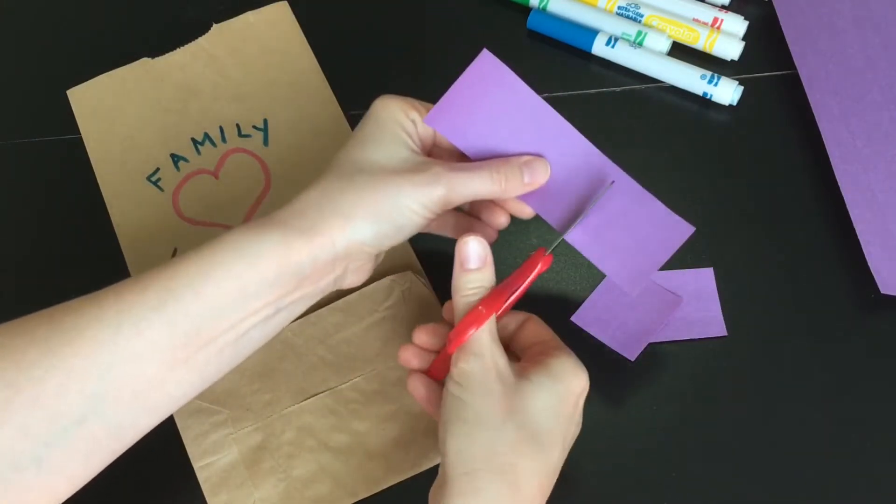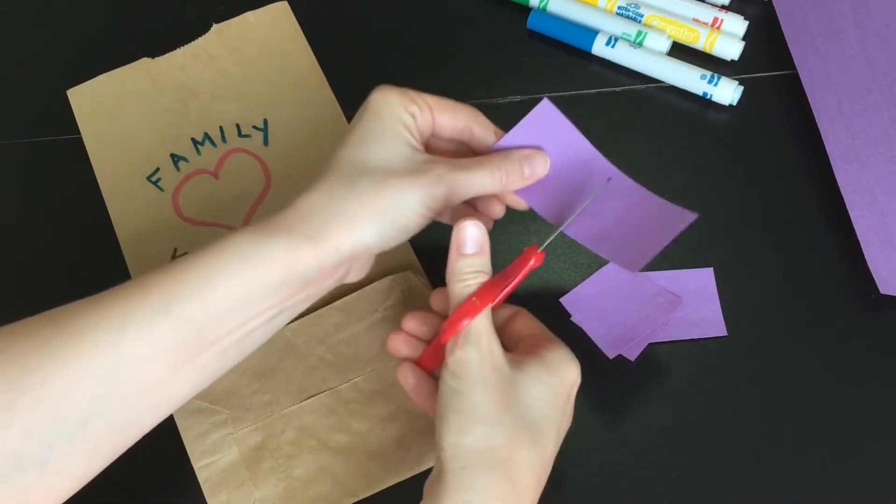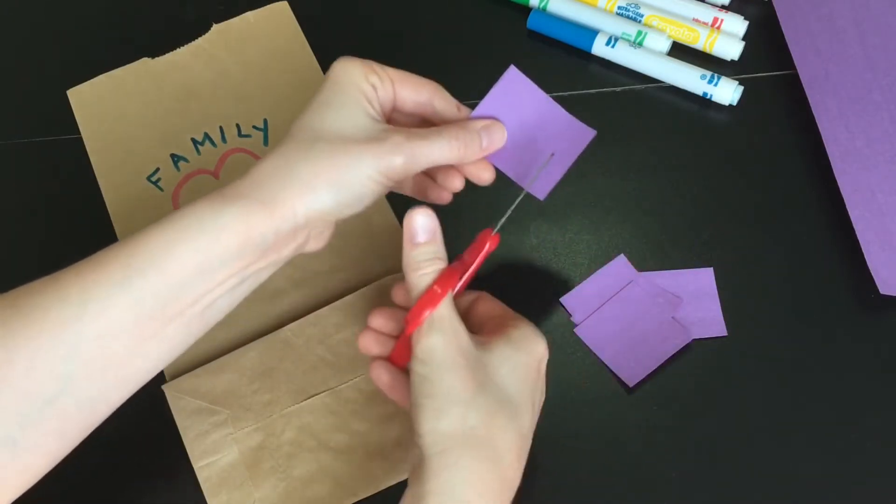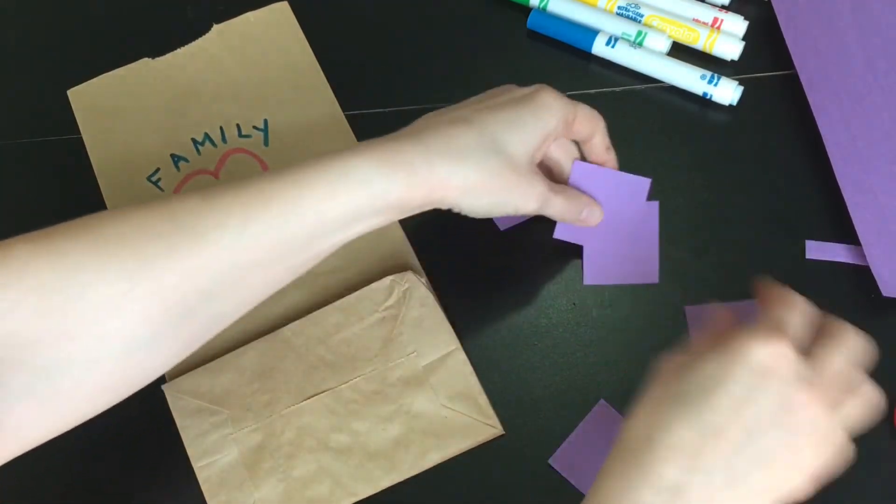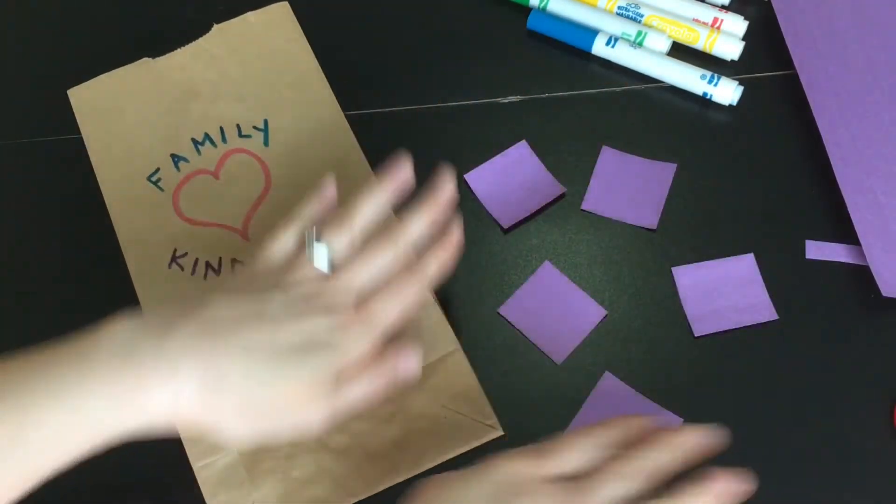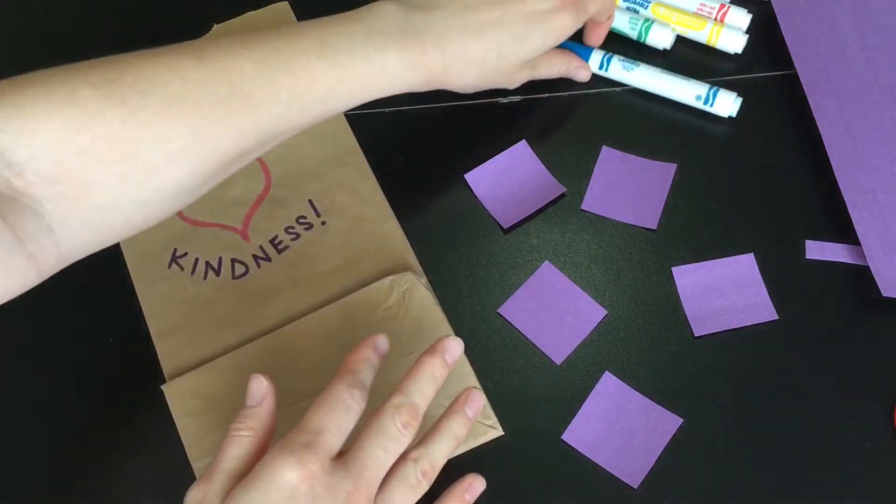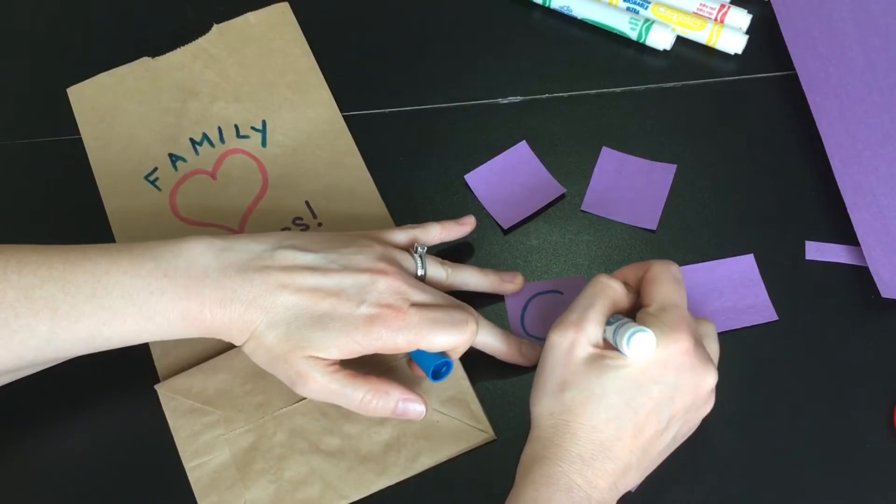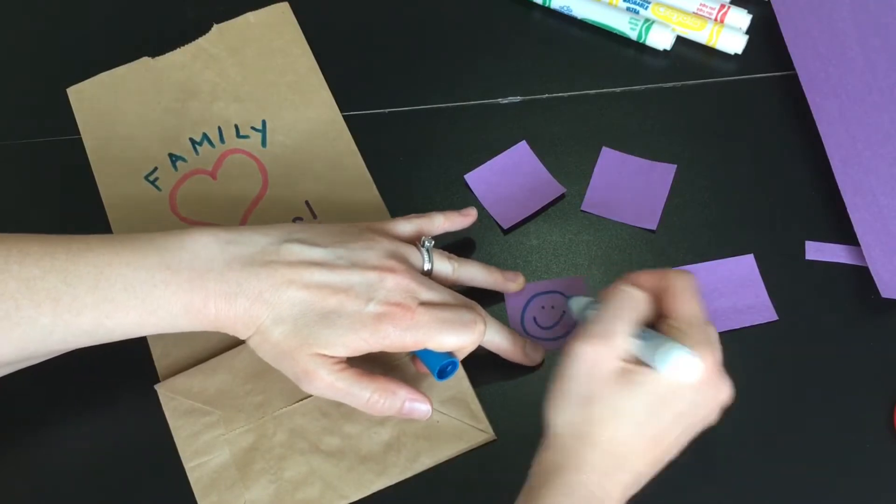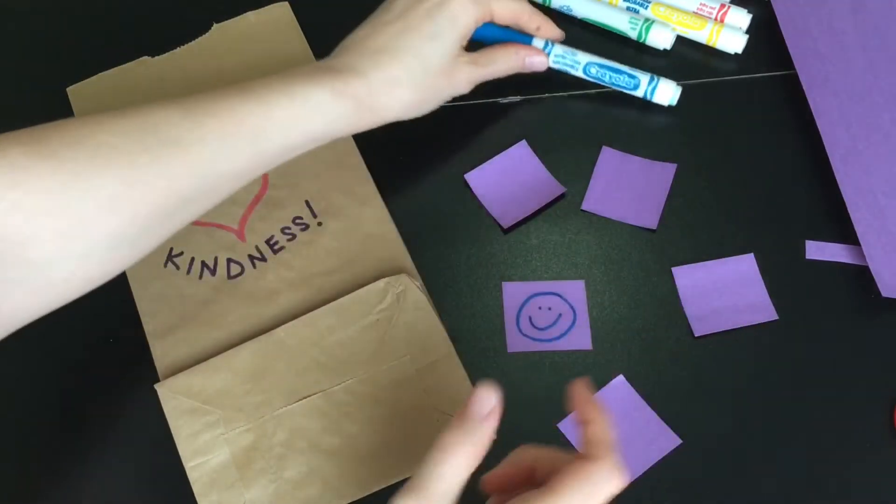Depending on how many feelings you want to use in your games, you can decide how many squares you want to make. Then you're going to draw various feelings. As an example, I'll show you how I might draw happy.